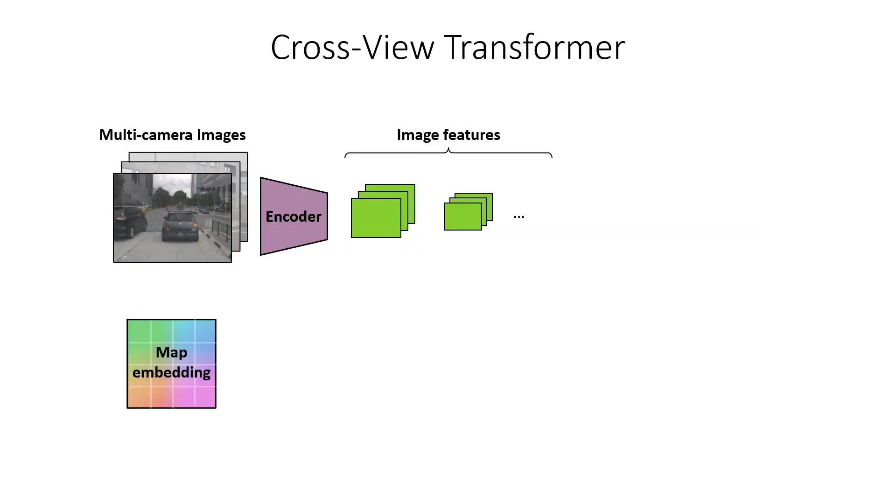So to go through the full architecture, we'll first take the images and encode them with this camera-aware positional embedding, where each pixel's positional embedding is given by the intrinsics and extrinsics of each camera. And you can think of these embeddings as vectors that point from the center of each camera to the pixel on the projected plane.